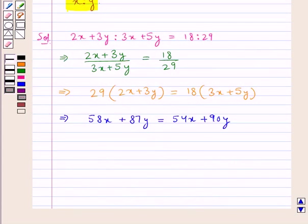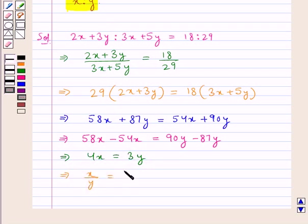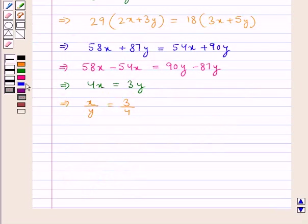Now we transpose 54x to the left hand side and 87y to the right hand side. So we have 58x minus 54x is equal to 90y minus 87y. That is we have 4x is equal to 3y and from here we get x upon y is equal to 3 upon 4. That is we have x is to y is equal to 3 is to 4.